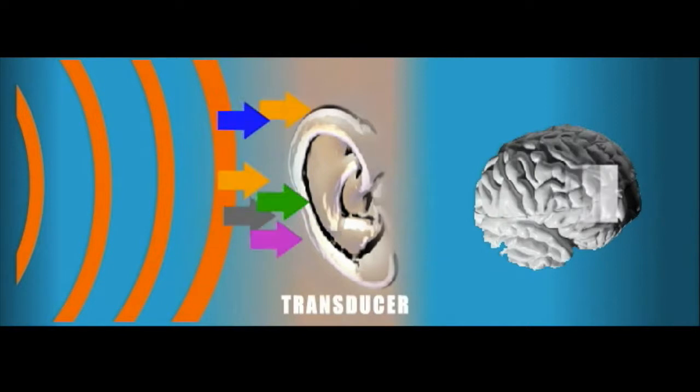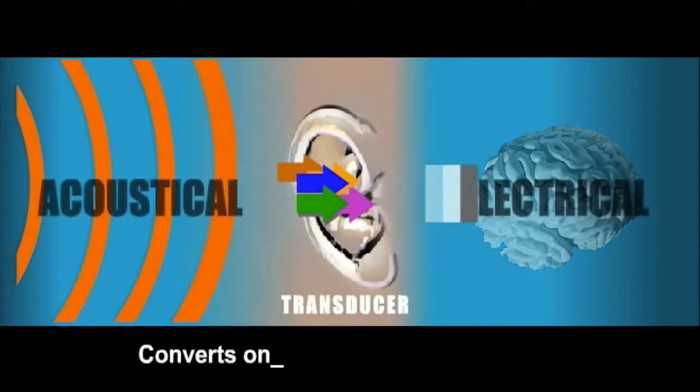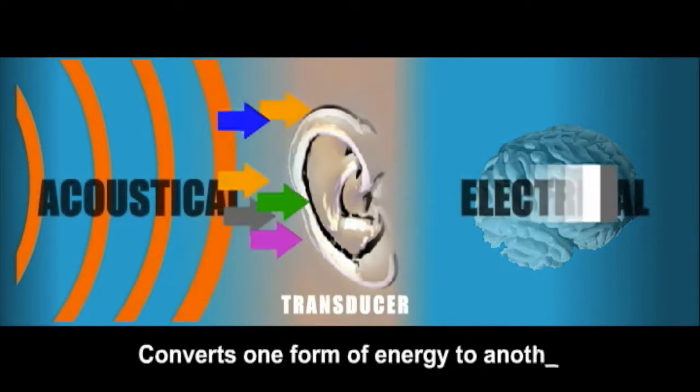Our ears are sensitive transducers that respond to changes in pressure. Our ears collect and process these changes and transmit them to the brain by way of nerve impulses. A transducer is a device that converts one form of energy to another.